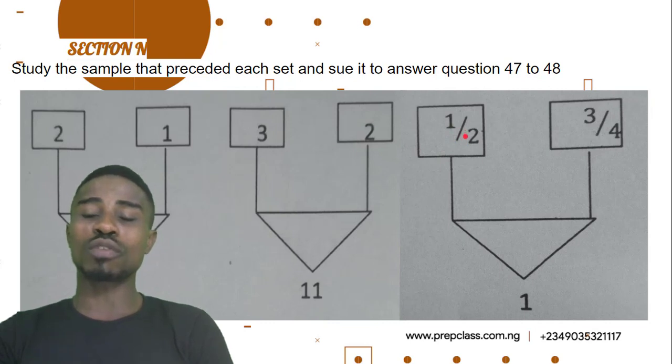1 over 2 times 1 over 2 will give us 1 over 4. 1 over 4 plus 3 over 4 will give us 1. Or, we can say 1 minus 3 over 4 will give us 1 over 4. Then square root of 1 over 4 will give us 1 over 2. So we've seen how to come about these answers using the first process and the reverse. With these, it will serve as a guide in solving questions 47 to 48.